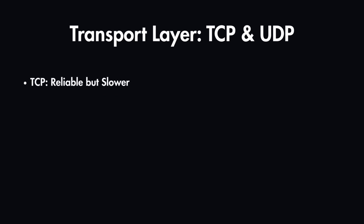We'll start with TCP, which is the reliable but slower version. Then we'll learn about UDP, which is the faster and less reliable version of TCP, and we'll compare both of them to decide which one to choose based on API requirements.